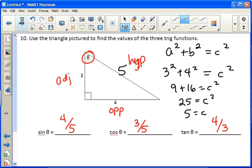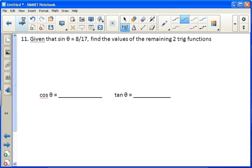Eleven, given that the sine of theta is 8 over 17, find the values of the remaining two trig functions. So we can draw whatever picture we want, just so it's a right angle. And if we have theta,